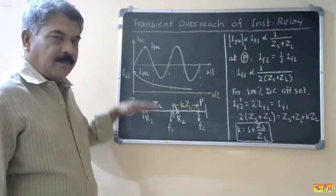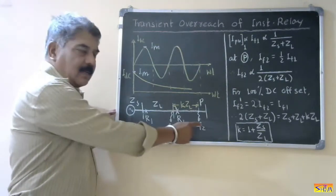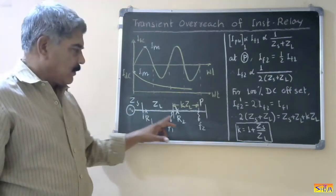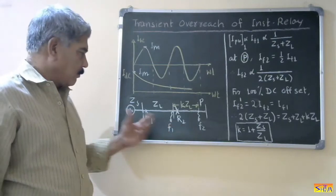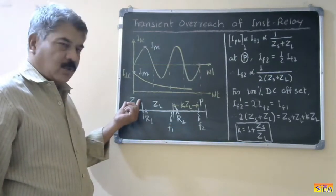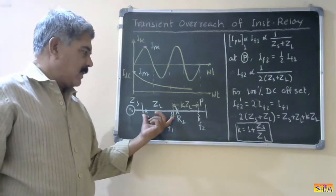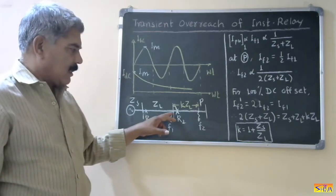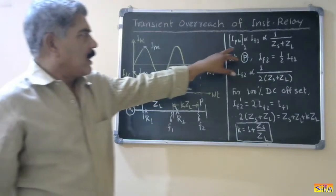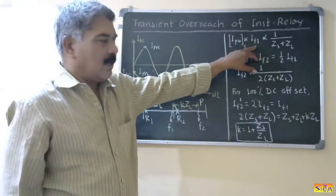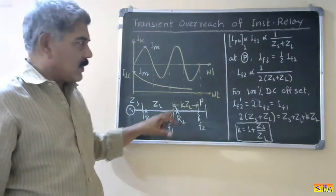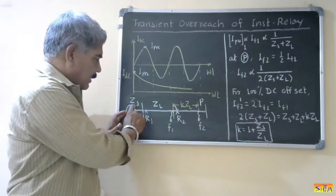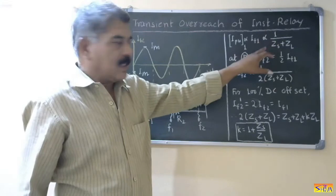Now let us come to the relay. For this simple radial system we have two sections from the source. For the first section we are using relay R1, and for the second section relay R2. ZS is source impedance and ZL is impedance of the line. We set relay R1 by considering the fault at the remote location F1, so the pickup of relay R1 will be proportional to 1 upon ZS plus ZL.